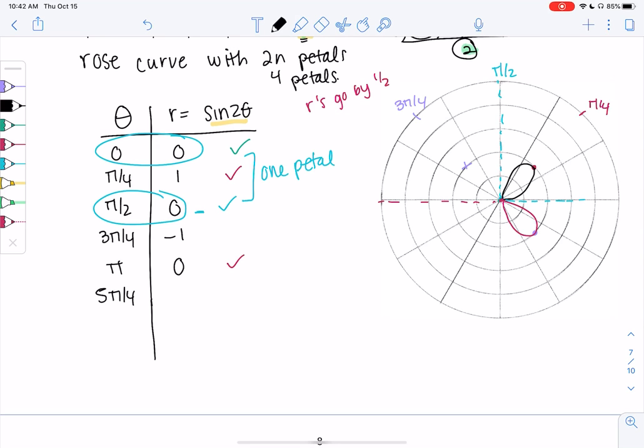We'll do the same pattern: 5 pi over 4, 3 pi over 2, 7 pi over 4, and 2 pi, just to make it all the way to 2 pi. Pause the video and plug those into sine of 2 theta and come back.